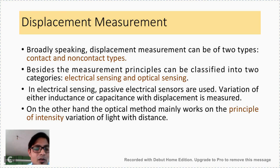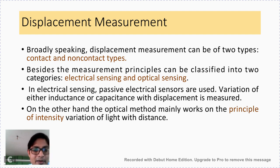Broadly speaking, displacement measurement can be of two types: contact and non-contact types. Besides, the measurement principles can be classified into two categories: electrical sensing and optical sensing. In electrical sensing, passive electrical sensors are used — variation of either inductance or capacitance with displacement is measured. On the other hand, the optical method mainly works on the principle of variation of intensity of light with distance.